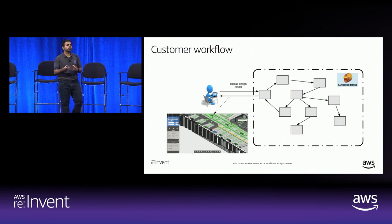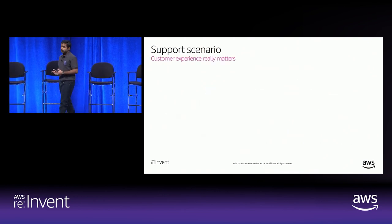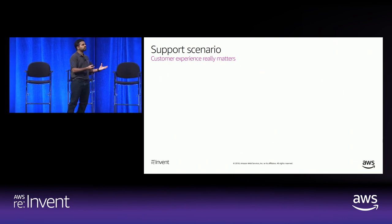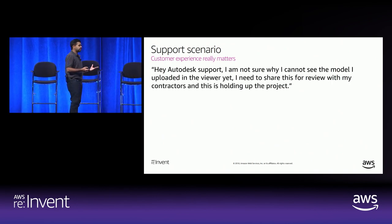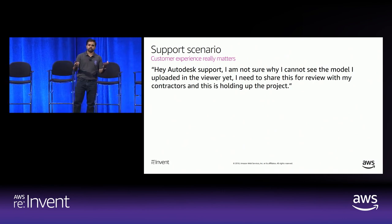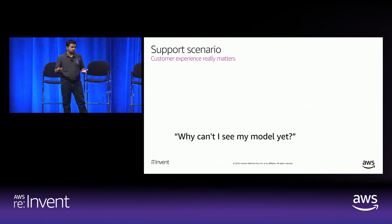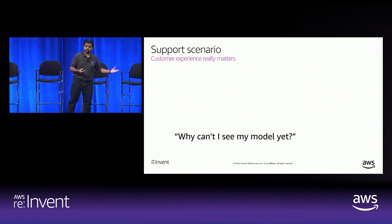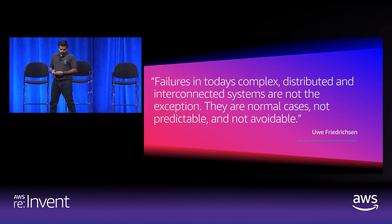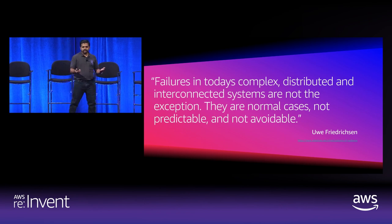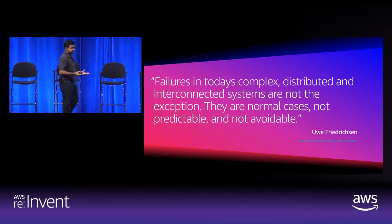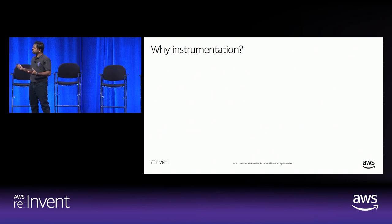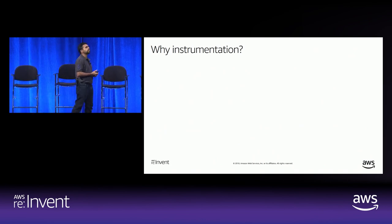A typical customer workflow: the customer uploads a design model that travels through various interconnected Autodesk Forge services, and in the end the customer gets back the rendered model. Customer experience really matters here — if one service has an issue, it directly affects the customer. The customer may reach support and say there's an issue with cloud services. With this in mind: failures in today's complex, distributed, interconnected systems are not the exception — in fact, they are normal cases. They are not predictable and they are not avoidable.